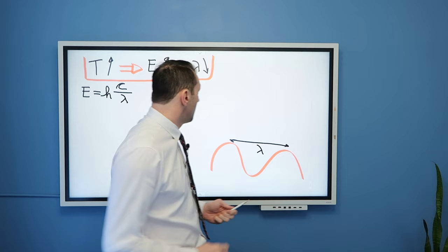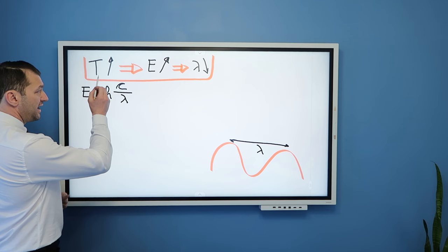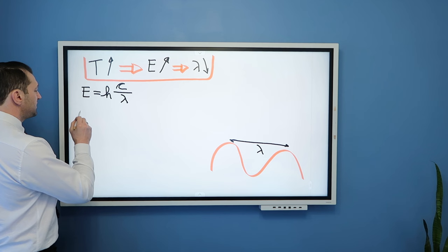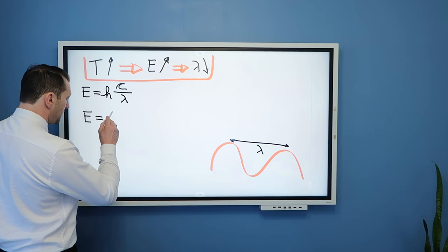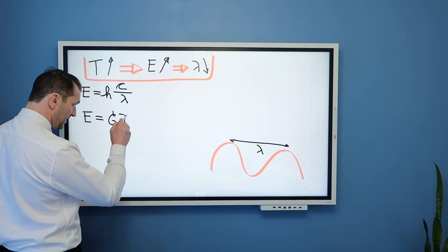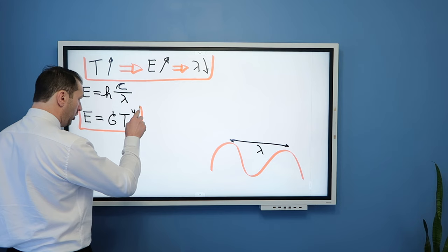Of course, then the question also becomes, is it possible to find relationship between temperature and energy directly? And the answer is yes. And that law is known as the great Stefan-Boltzmann's law that says energy emitted by an object is equal to some constant, known as Stefan-Boltzmann's constant, times temperature to power 4. This is now new law that we are introducing in our fundamentals playlist, and this law is really great.